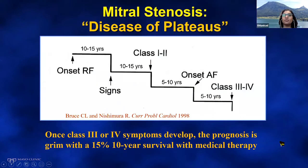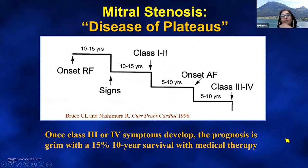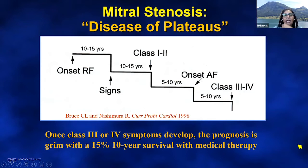We think of mitral stenosis as a disease of plateaus. You have rheumatic fever onset in youth or young adulthood, hopefully treated appropriately. If not, there's a 10 to 15 year lag before you get signs, then another 10 to 15 year plateau before developing New York Heart Association class symptoms. Once class three or four symptoms develop, prognosis is grim with 15% 10-year survival on medical therapy alone. We want to prevent mitral stenosis by treating rheumatic fever aggressively and following patients closely before they develop severe symptoms.